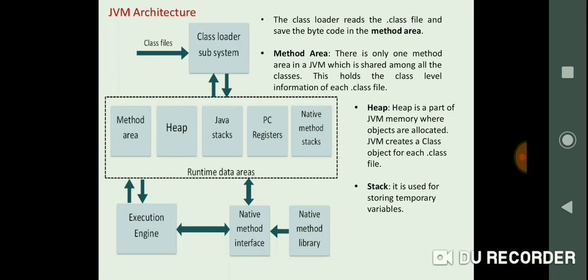This is the JVM architecture. In JVM architecture we have class loader subsystem, in which all the class files will be included and this class loader reads that .class file and saves it in the form of bytecode in method area. This method area is one of the part of JVM which is shared among all the classes. This holds the class level information of each .class file. Then the heap is there. Heap is the part of JVM memory where objects are allocated. JVM creates a class object for each .class file. Next is a stack. Stack is used for storing local variables. Then the PC registers are there, native method stacks are there.